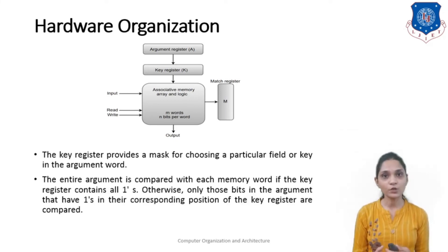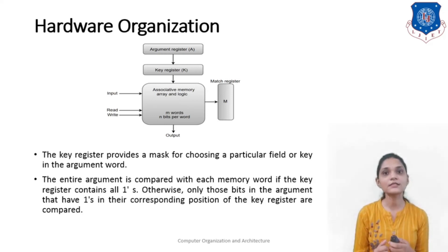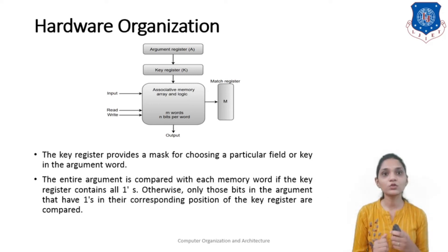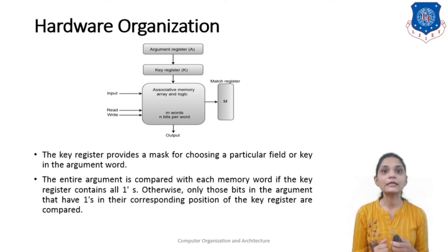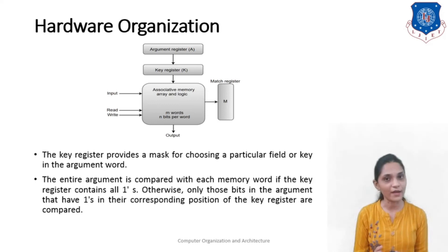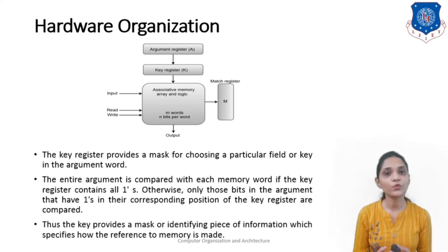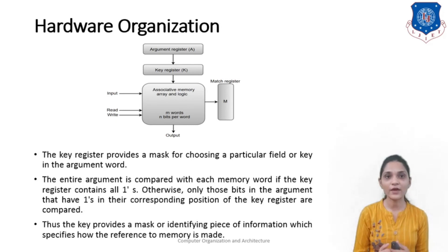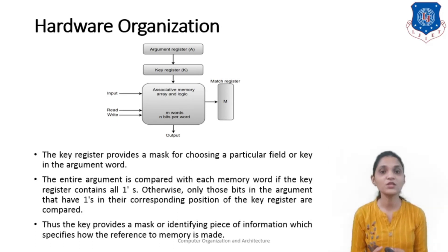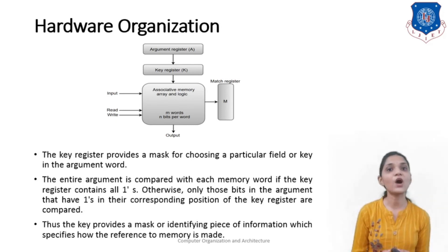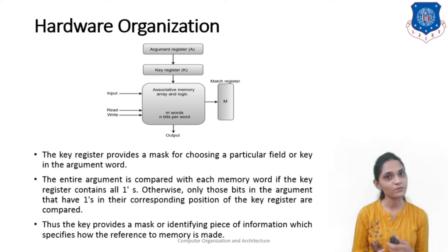The entire argument is compared with each memory word if the key register contains all ones. Otherwise, only those bits in the argument register that have a one in their corresponding position in the key register are compared. Thus, the key register provides the mask for identifying the piece of information which specifies how a reference to memory is made.